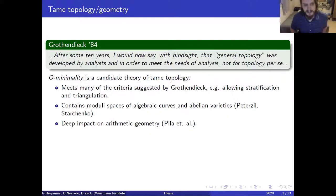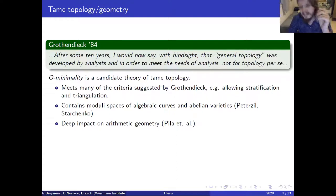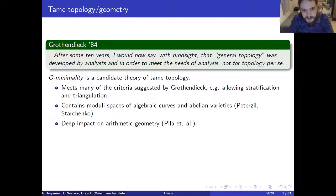O-minimality is a candidate theory for the tame topology that Grothendieck asked for — you can stratify sets that are o-minimal. What is also much more recent is that o-minimal structures contain very important and complicated spaces like moduli spaces of algebraic curves and abelian varieties. It turned out, quite unexpectedly, mostly through Pila, Wilkie, and some other mathematicians, that tame geometry is very useful for arithmetic geometry.